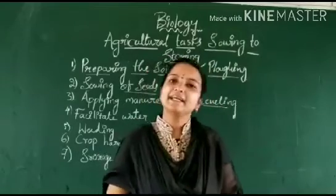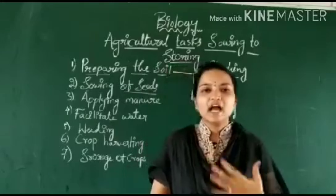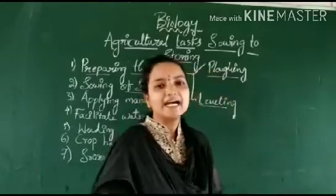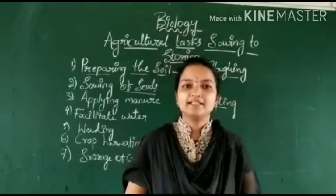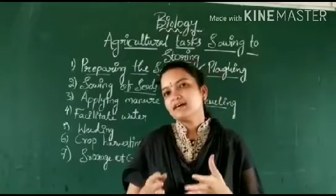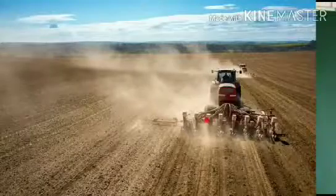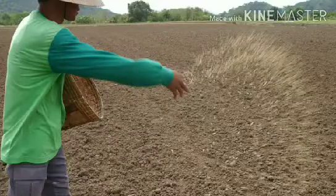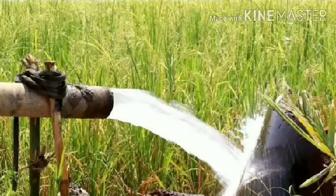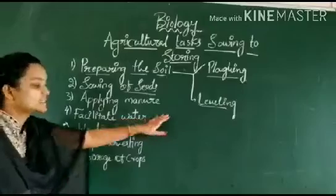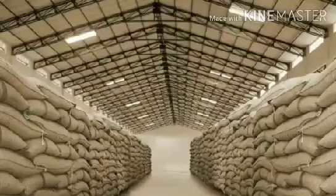The cultivation of paddy involves a series of activities. We have to learn about the agriculture practices to be followed from time to time and their methods in general. Agriculture practices involve preparing of the soil, sowing of seed, applying manure, irrigation, weeding, crop harvesting, and storage of crops.